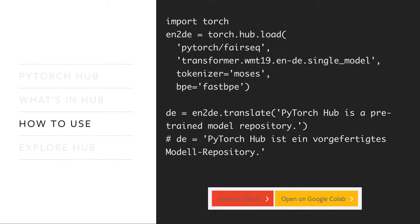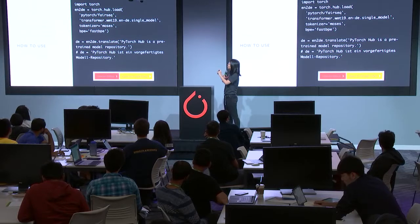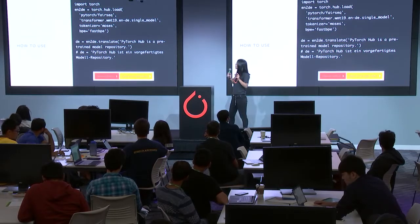I'll go over the Torch Hub APIs quickly. Import Torch, of course. Then you can use the Hub Load API to load the English-to-German Transformer model from the FairSeq repo with the right configs.